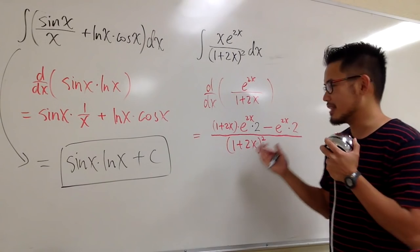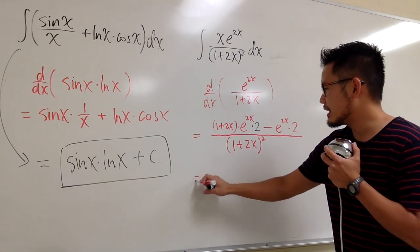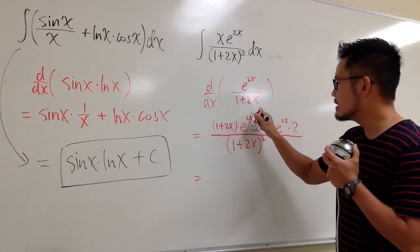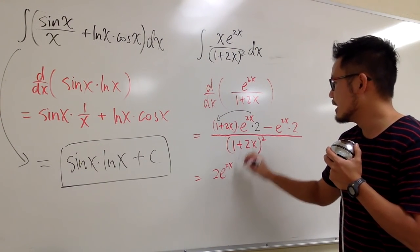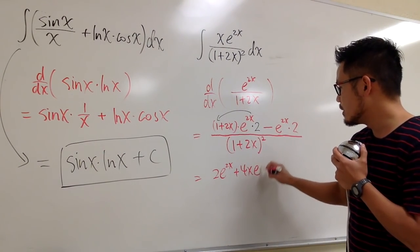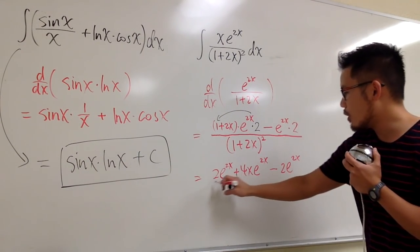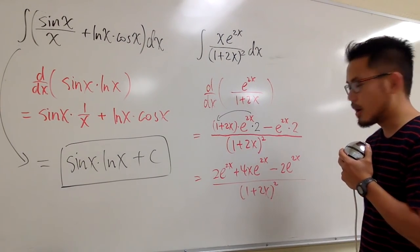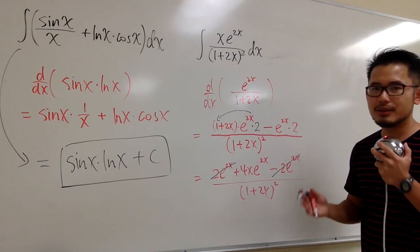Okay, so this is the result of the quotient rule. And we can simplify this a little bit, of course. And I can just distribute this backwards. You see this is 2e to the 2x. We'll take this, multiply with 1, which we get 2e to the 2x. And then this times the 2x, we get plus 4xe to the 2x. And then minus 2e to the 2x, over that, which is the 1 plus 2x, raised to the second power. And we see that this and that cancel out exactly.